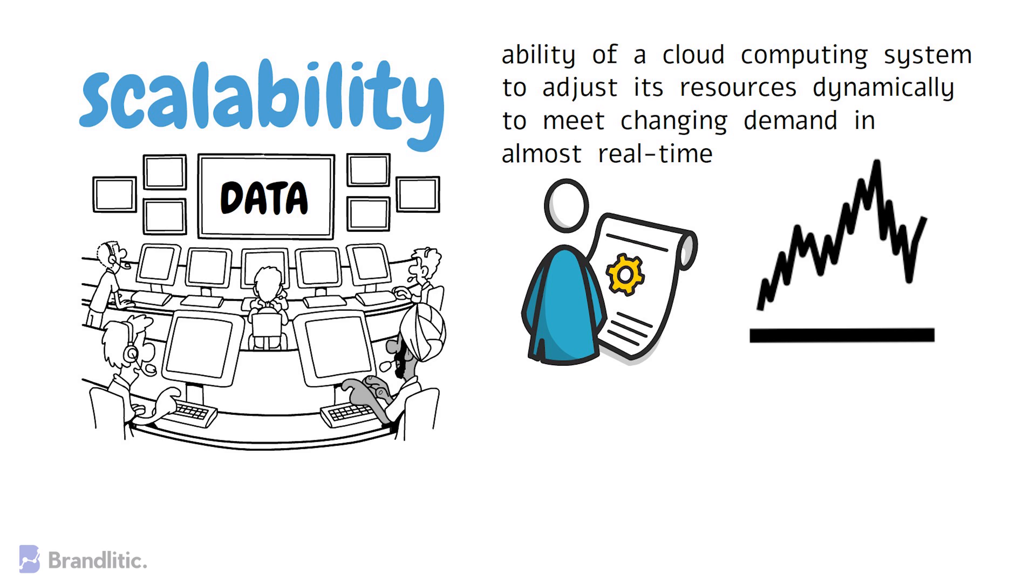There are three types of cloud scalability: vertical, horizontal, and diagonal, each with its distinct advantages and limitations. Let's understand each one of them one by one.